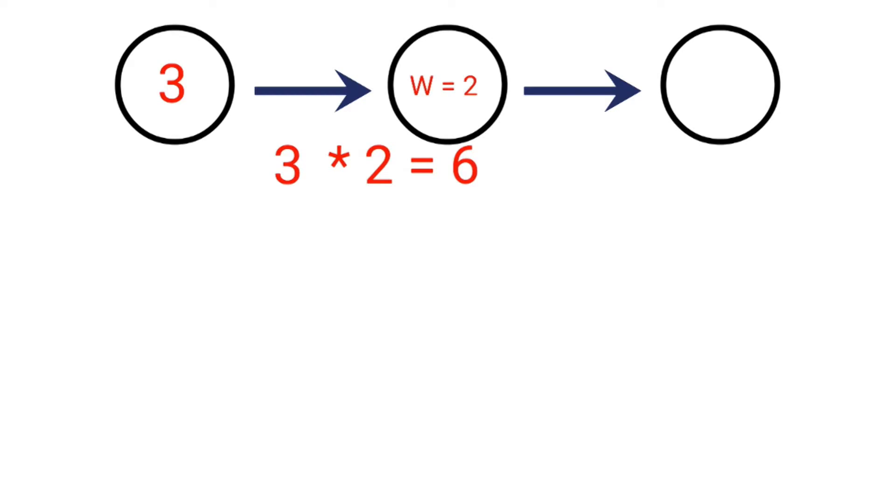The next step in a neural network would be to pass this 6 to our activation function. For this example, we'll use what's called the sigmoid activation function. I want to point out here, we're not going to really get into specific types of activation functions, because just know that there are many different types.